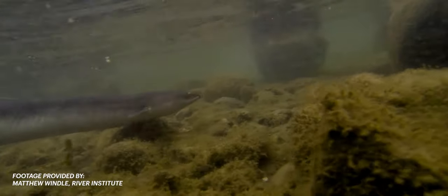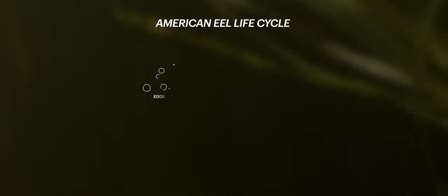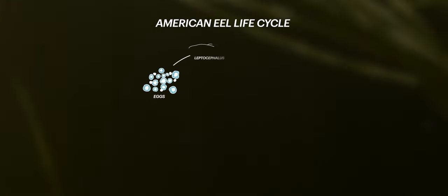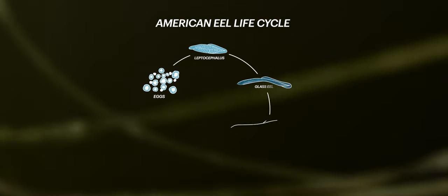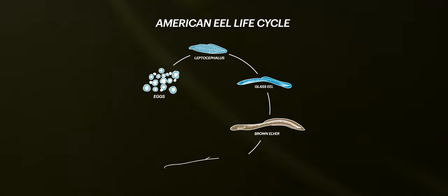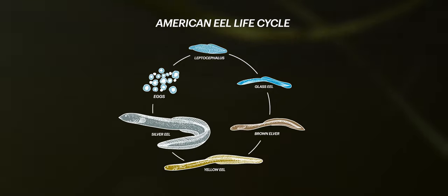This eel undergoes many changes throughout its life, transforming from egg, to leptocephalus, to glass eel, to elver, to yellow eel, and finally to silver eel.